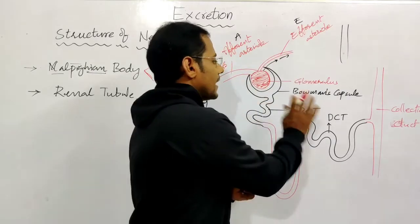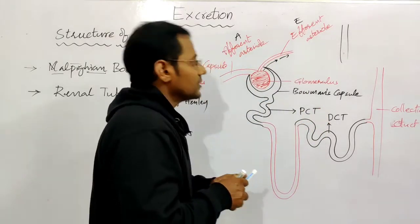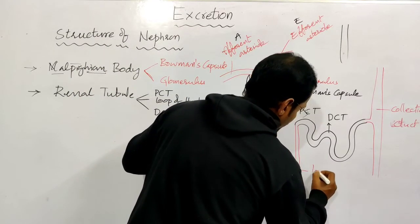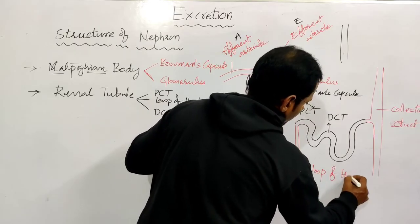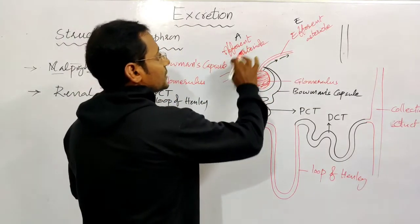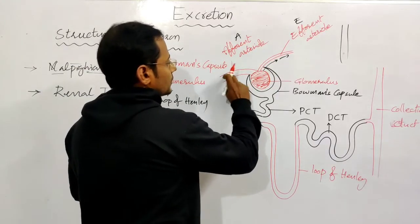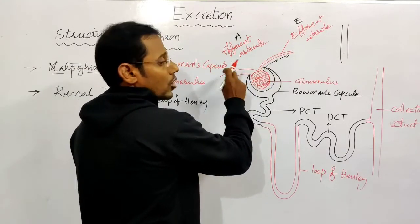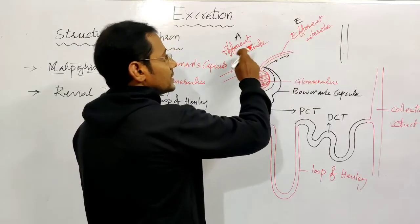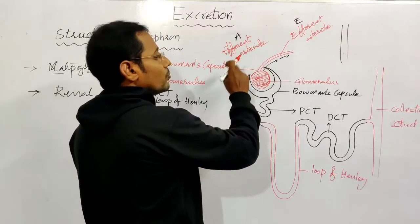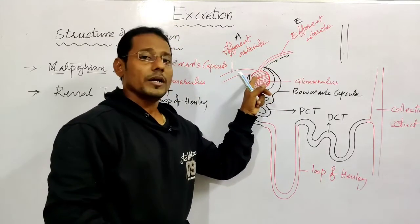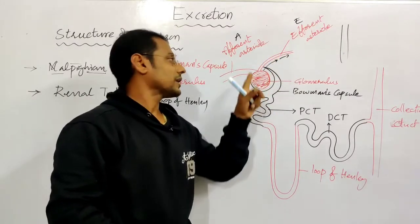So this is the loop of Henley - let me write the name here. This is the loop of Henley. Now comparing the diameter of the afferent and efferent arterioles.